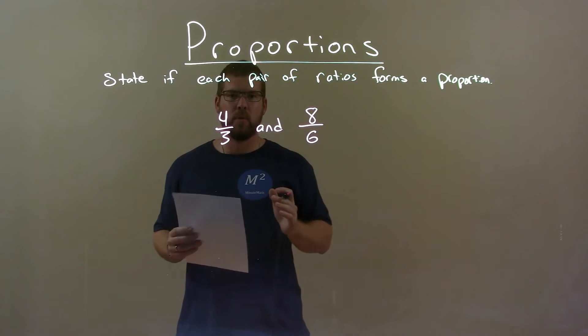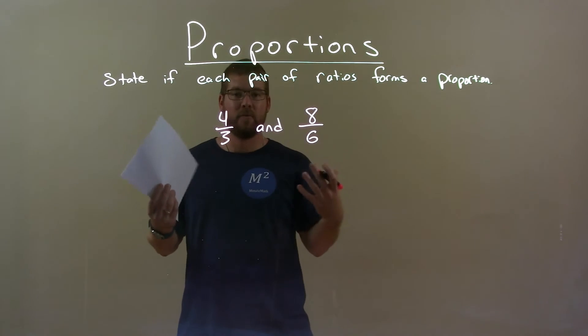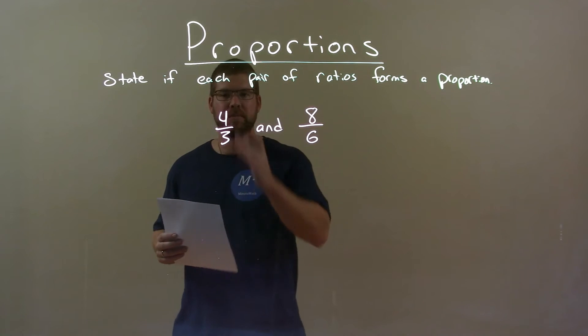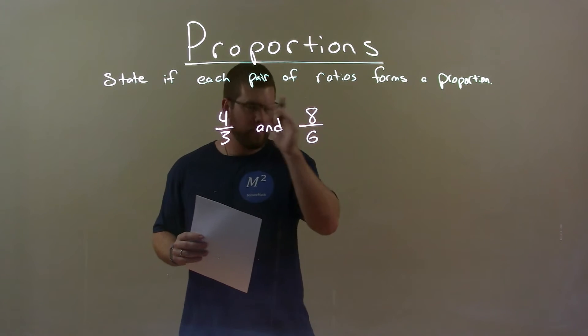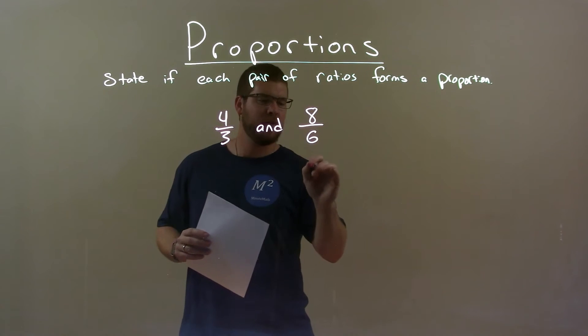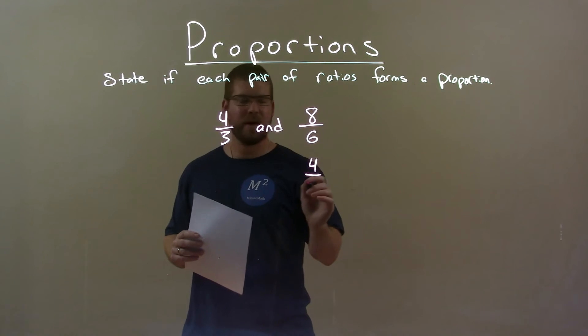4 thirds cannot simplify, but 8 over 6, we can. Both are divisible by 2. 8 divided by 2 is 4, and 6 divided by 2 is 3.